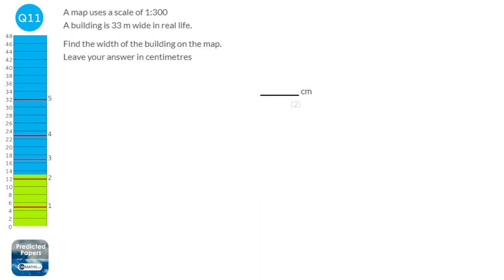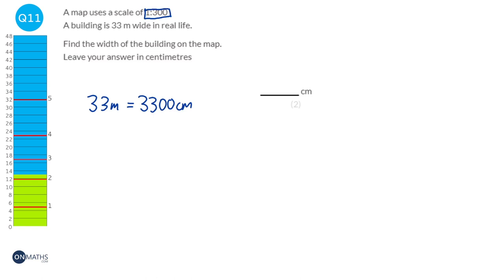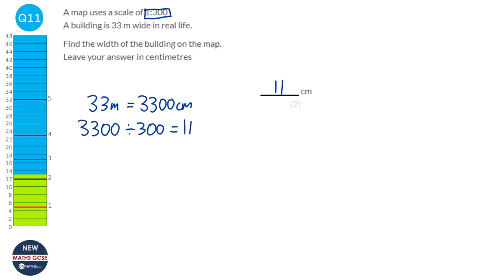I'm going to work out the width of the building in centimetres. It says 33 metres, so I'm going to convert that into centimetres by multiplying by 100. Now with a scale of 1 to 300, it means 300 in real life is 1 on our map. So I need to divide by 300 to find what it's going to be on the map. Dividing gives the answer 11, so it's going to be 11 centimetres on our map.